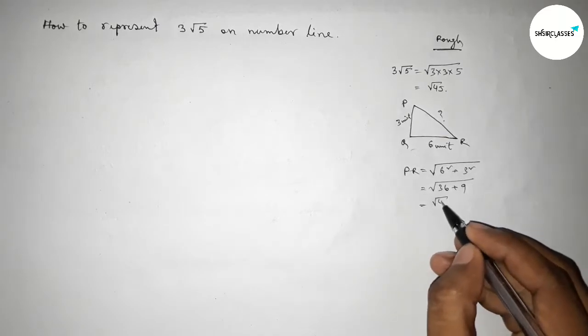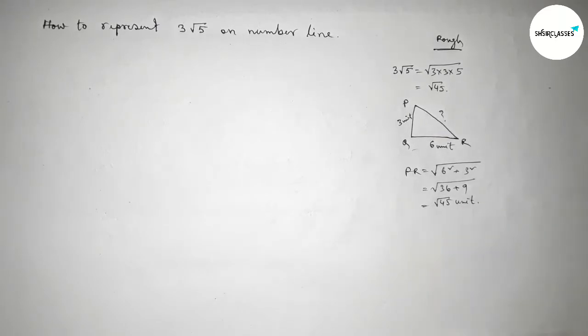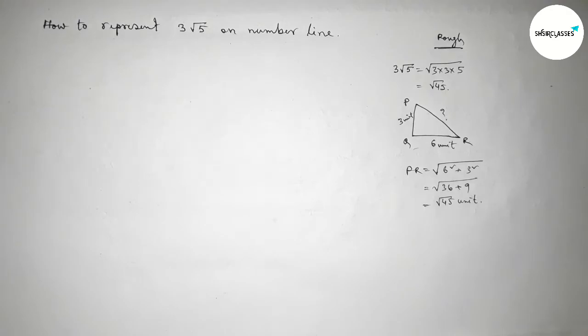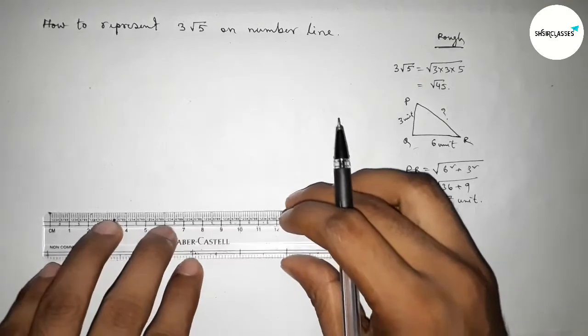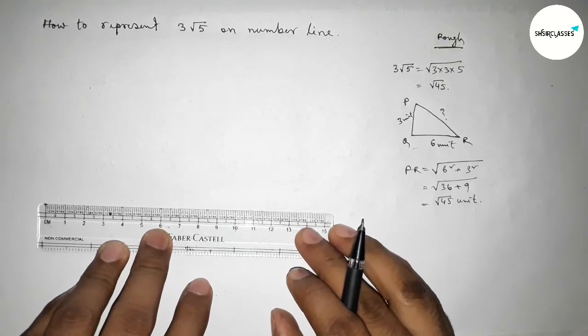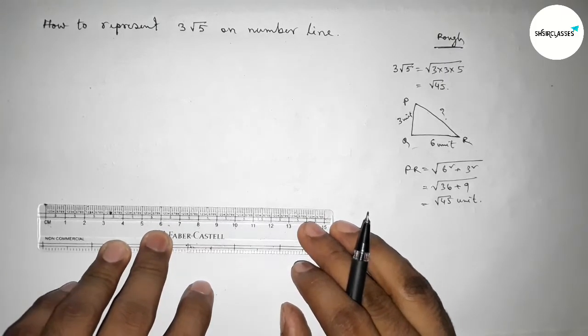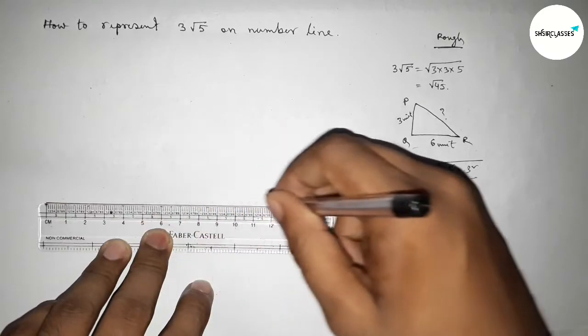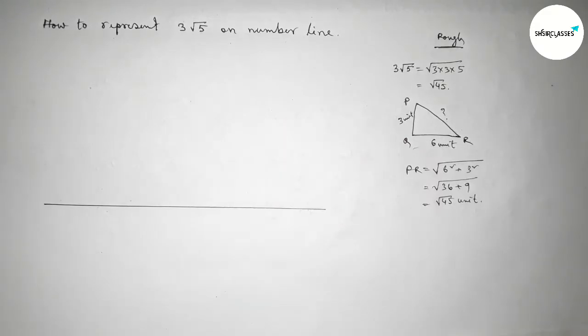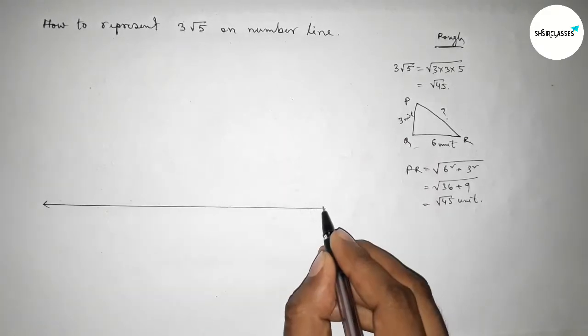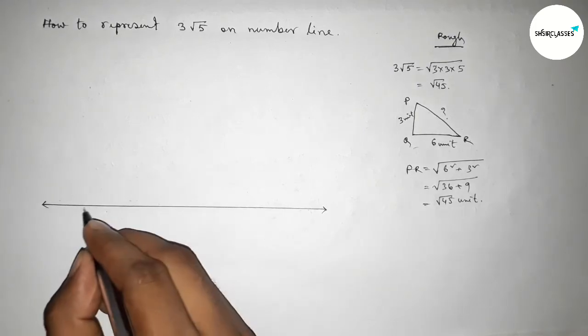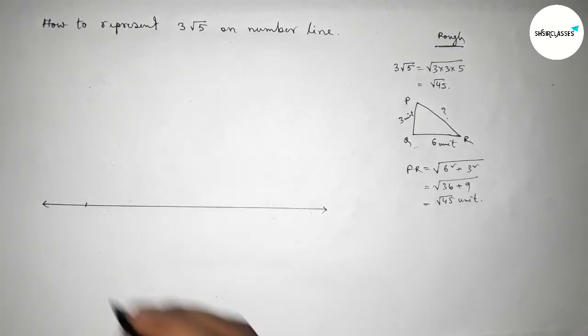Now first of all we have to draw here a number line. So first drawing here a line of any length and taking arrow marks on both sides, and taking here starting number zero.